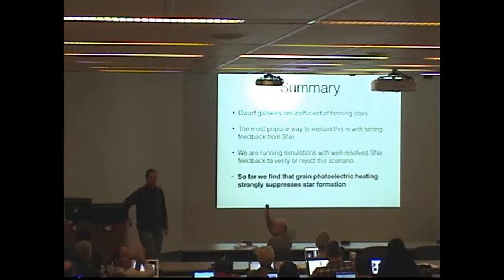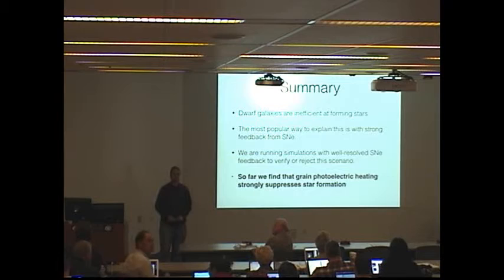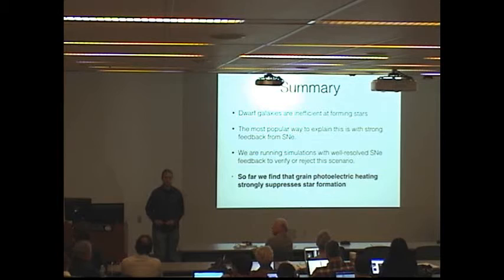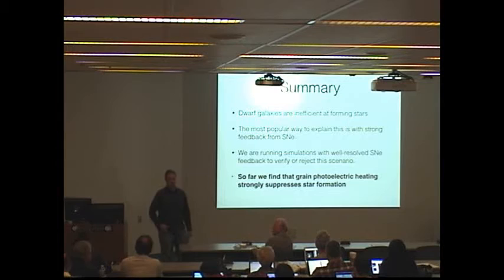Do you think you can reproduce this effect by using a simplified cooling function that sort of cuts off at a higher temperature rather than including the heating self-consistently? You can do something like that, maybe. We've done tests where we've basically imposed a temperature floor on these galaxies. And you do get a similar reduction in the star formation rate if you, say, set the minimum temperature to 20 Kelvin.